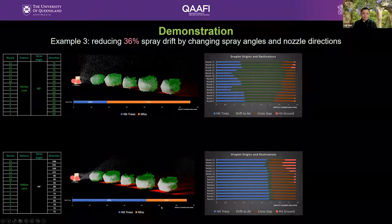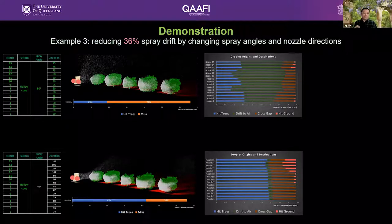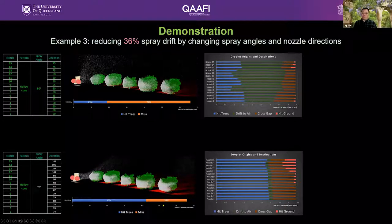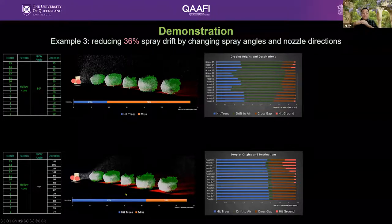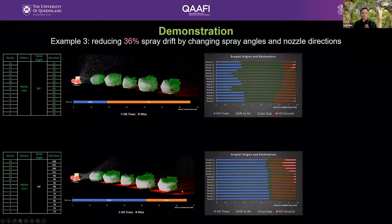We then made further changes, not only to the nozzle directions but also to the spray angles. The first row shows the original settings and results, and the second row shows our modified spray angles and nozzle directions. After this modification, we found that spray drift could be reduced from 71 percent to approximately 35 to 36 percent. That means cost and waste can be saved by 36 percent with no need to retrofit or replace the existing sprayer — which means minimal cost to the growers.